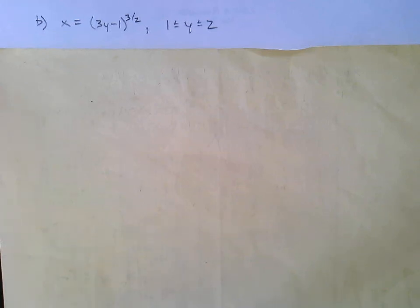Picking up where we left off, part b, we're going to find the arc length for x equals quantity 3y minus 1 raised to the 3 over 2.